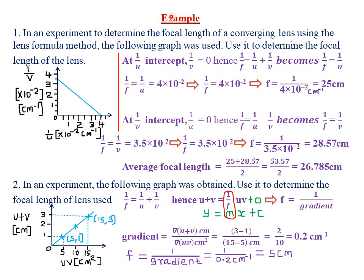Today we are looking at examples involving graphical analysis of the lens formula. Our first example is that in an experiment to determine the focal length of a converging lens using the lens formula method, the following graph was used. This is a graph of 1/v against 1/u, in per centimeters.